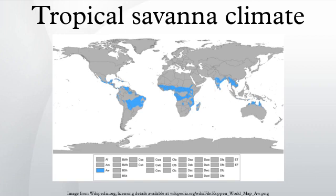Tropical savannah climate, or tropical wet and dry climate, is a type of climate that corresponds to the Köppen climate classification categories Aw and As.